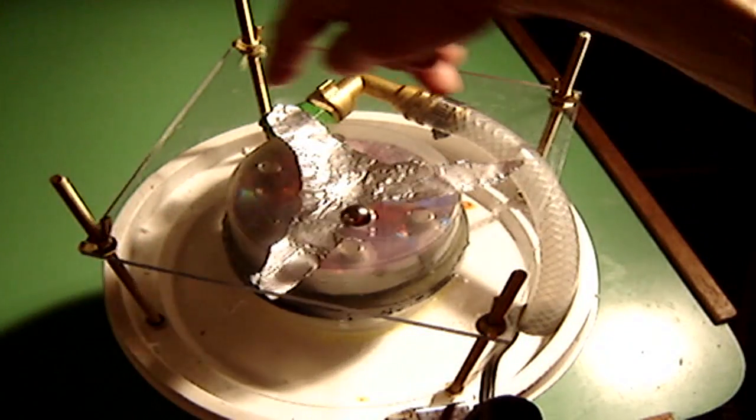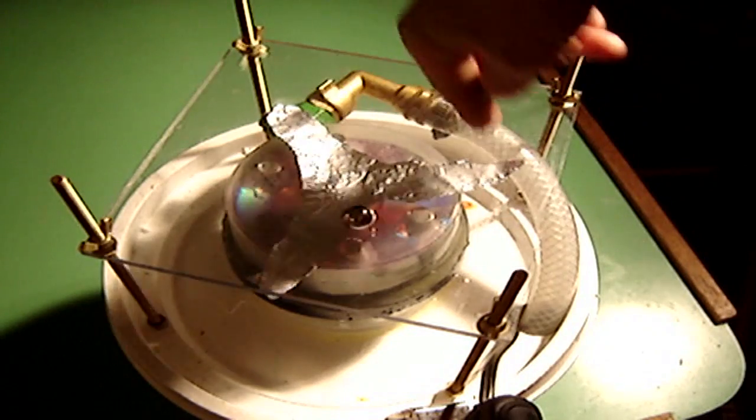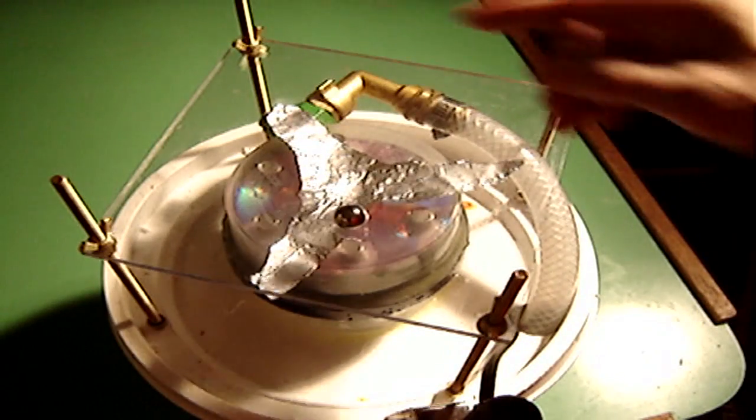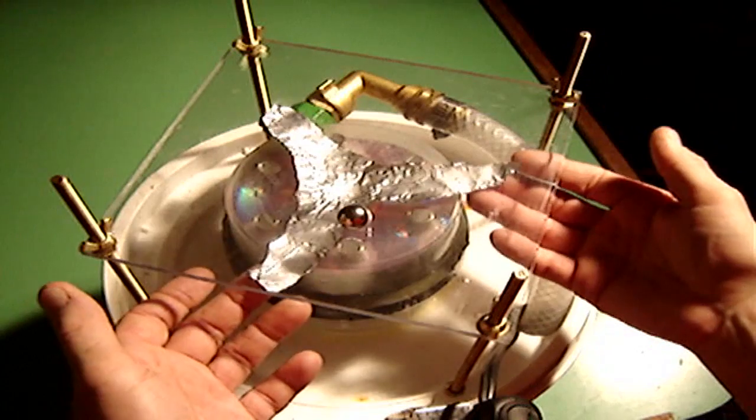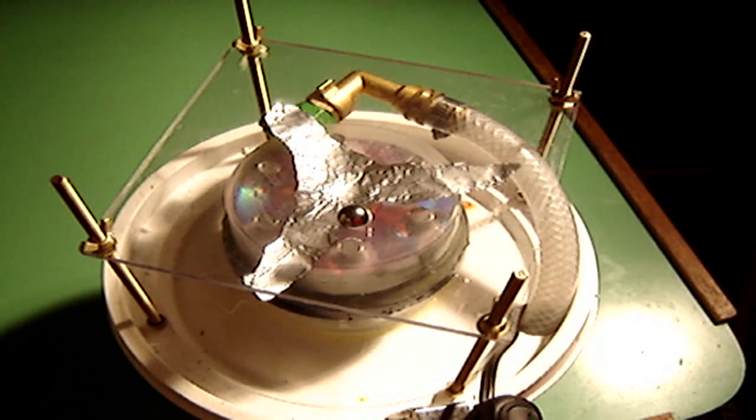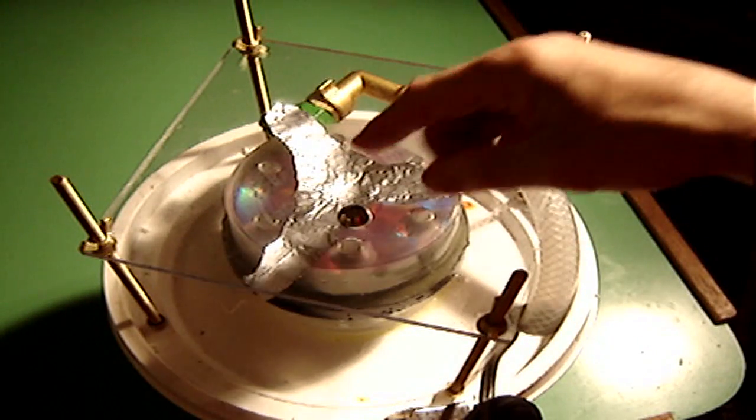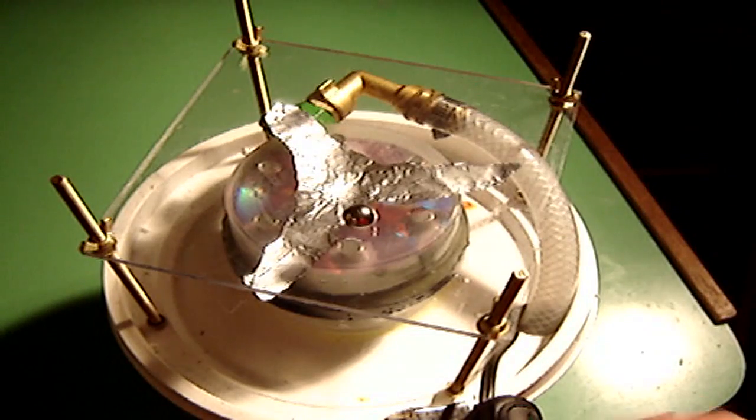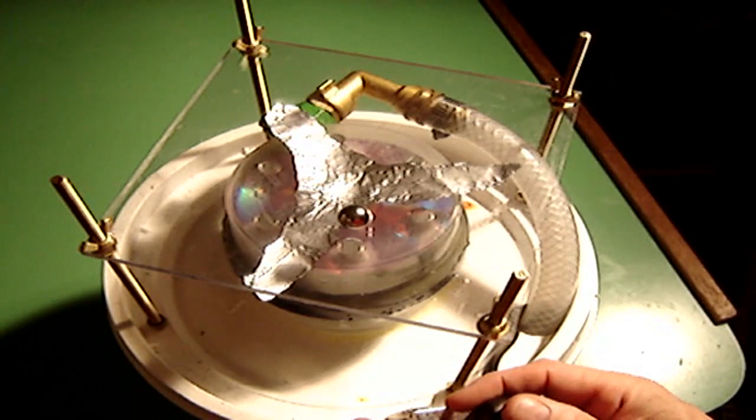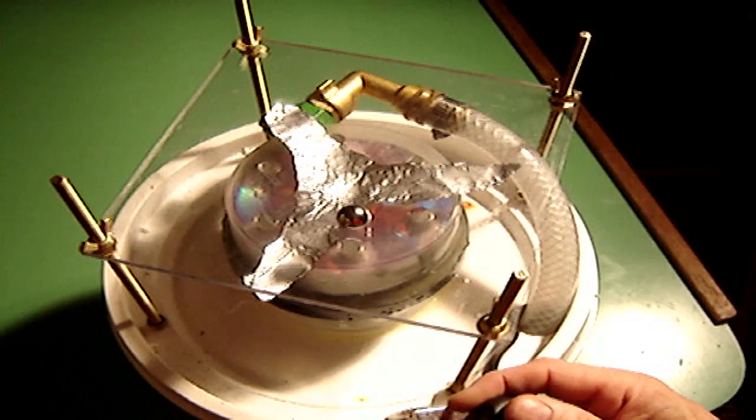The turbine goes in this direction, counter-clockwise, and that should spin the tin foil little propeller there, and we'll see what happens with the ball at the same time. Okay, here we go.